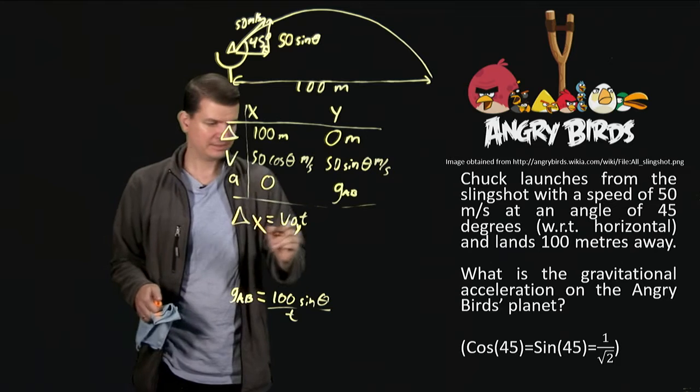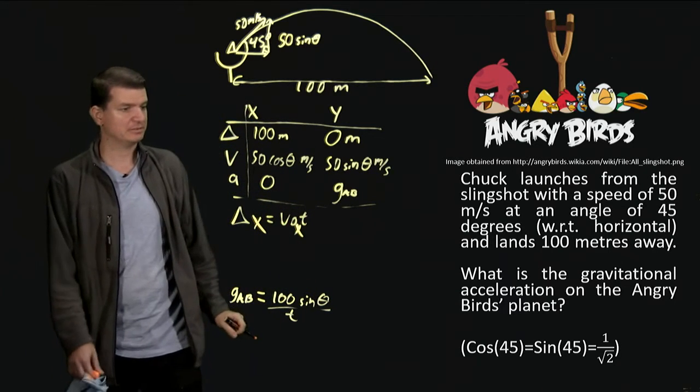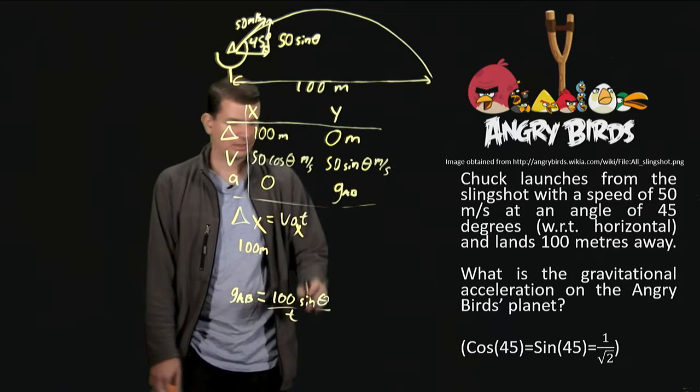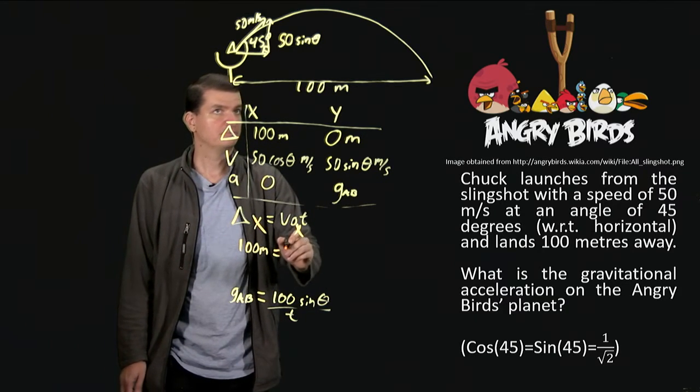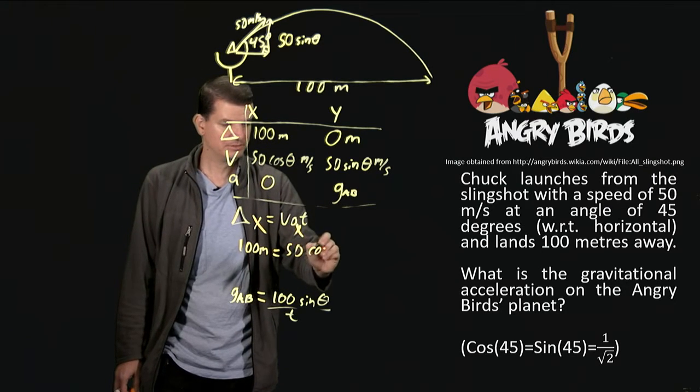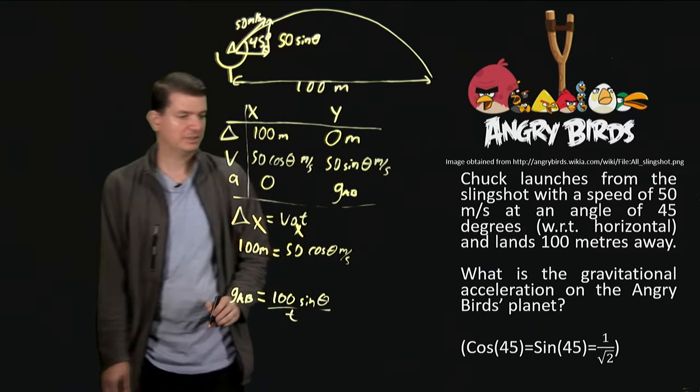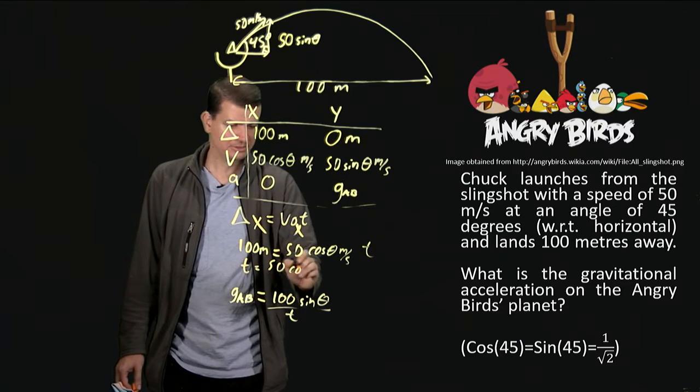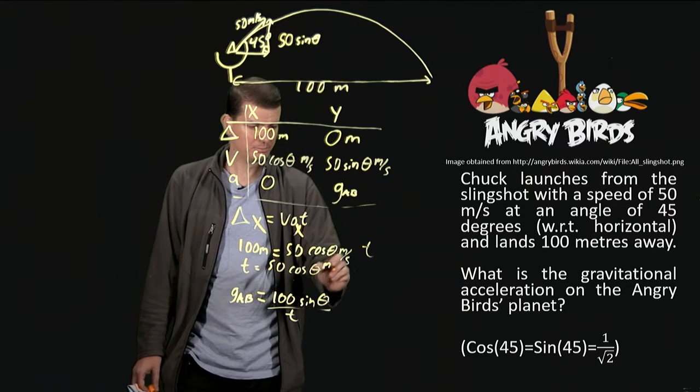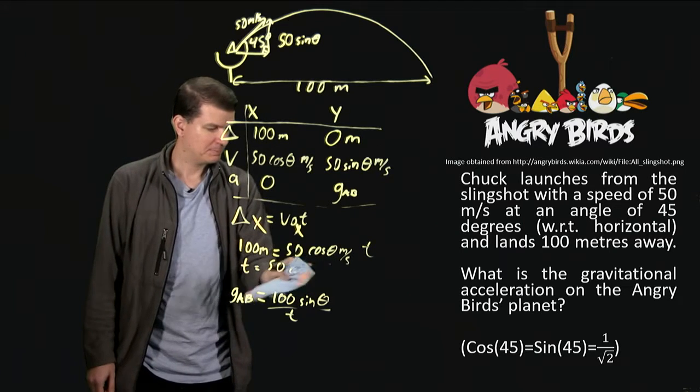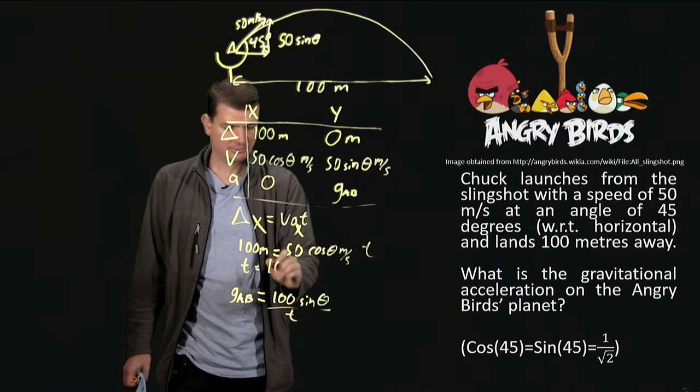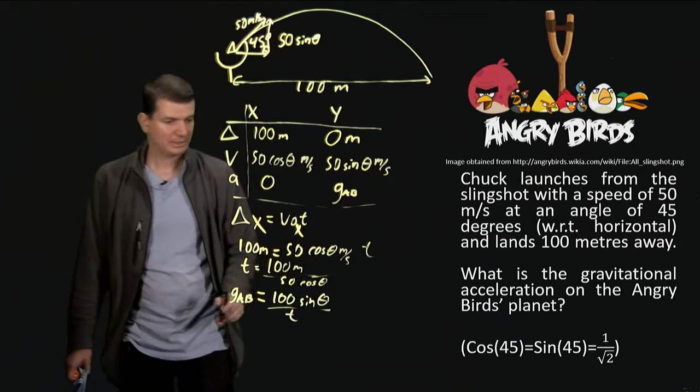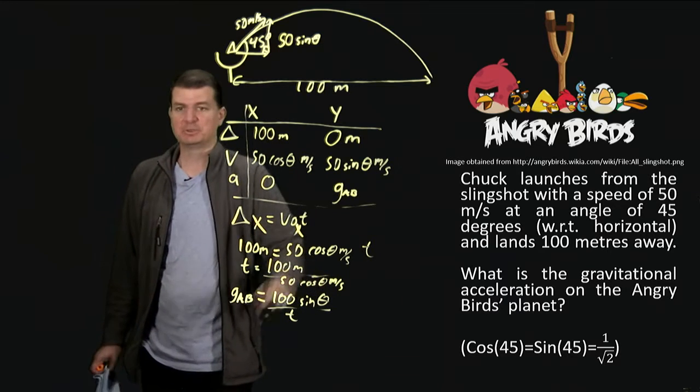So changing the y's to x's, we're just doing delta x is v0_x times t. So delta x is 100 meters, and that's supposed to equal this v0_x, which is our 50 cos theta meters per second, if we're keeping track of units, times the time. Which means the time is 100 meters divided by 50 cos theta meters per second.